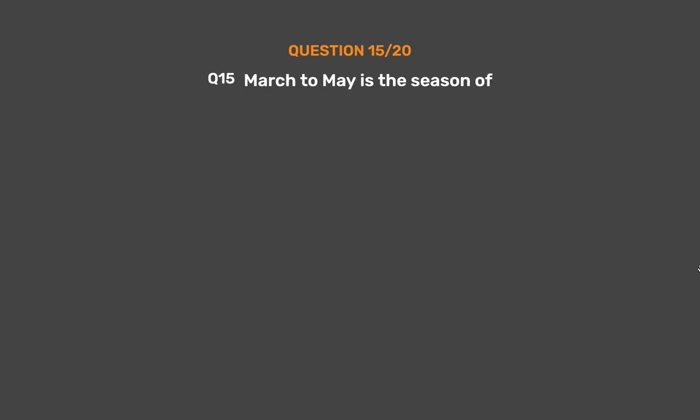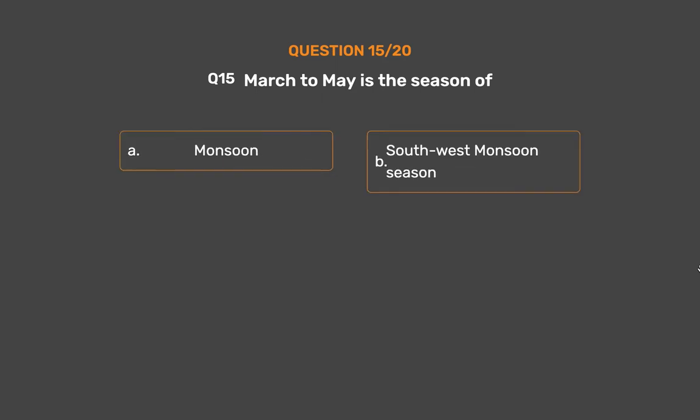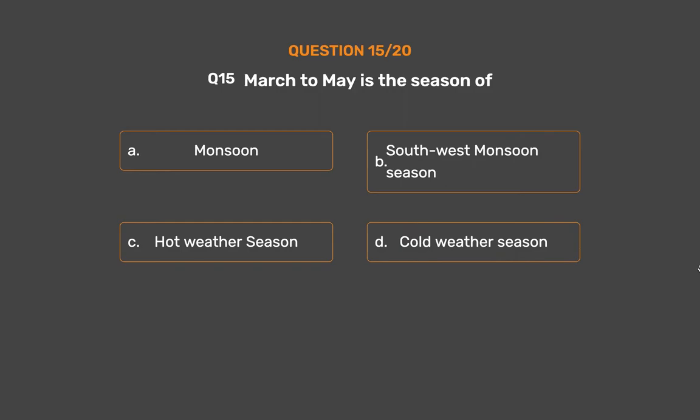Question No. 15: March to May is the season of — Option A: Monsoon, Option B: Southwest monsoon season, Option C: Hot weather season, Option D: Cold weather season.